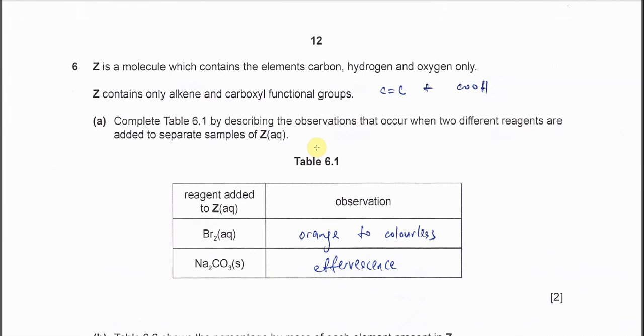Question 6. Z is a molecule that contains carbon, hydrogen and oxygen.